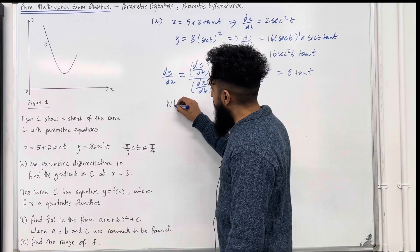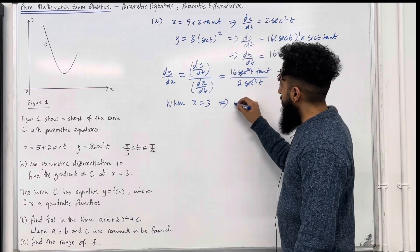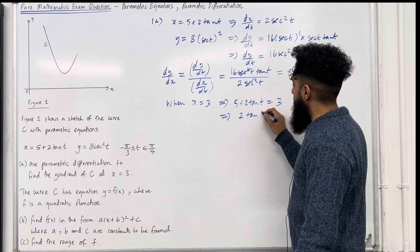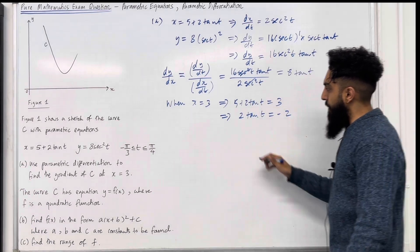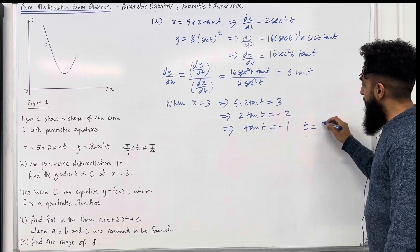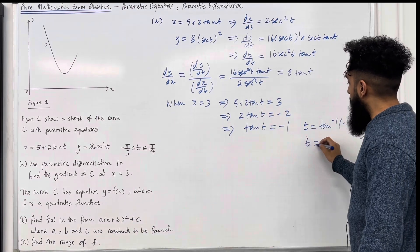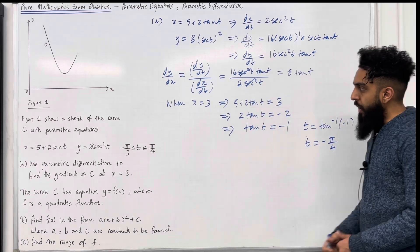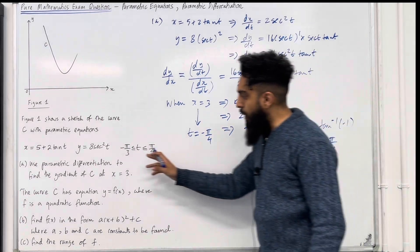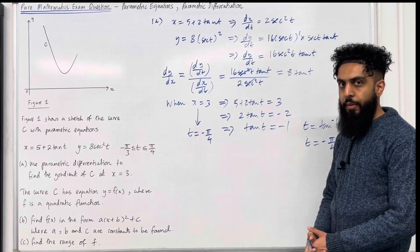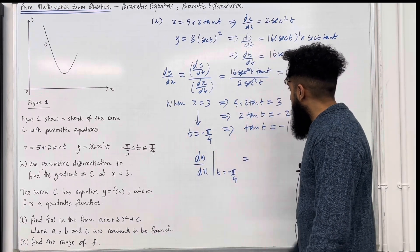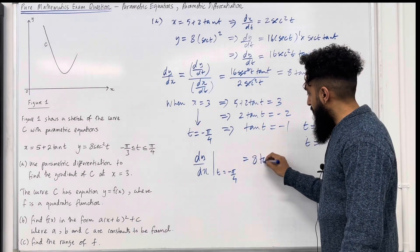When x is equal to 3, this implies that 5 plus 2 tan t equals 3. So 3 minus 5 is minus 2, meaning 2 tan t equals minus 2, and therefore tan t equals minus 1. I can work out t by taking tan inverse of minus 1, which gives t equal minus pi over 4. So the gradient of the curve C at x equal 3 is dy over dx evaluated at t equal minus pi over 4, which equals 8 tan(minus pi over 4), giving precisely minus 8.